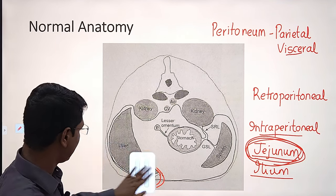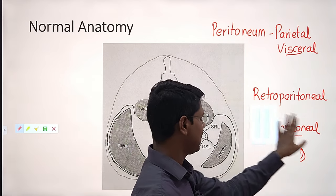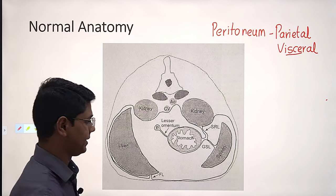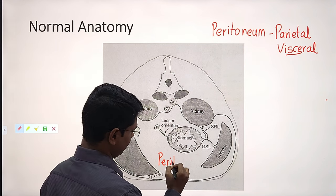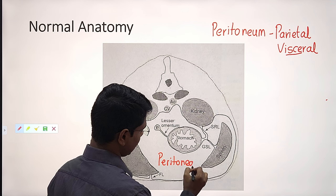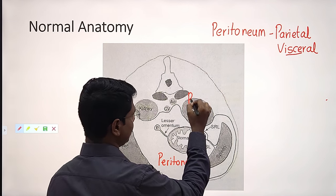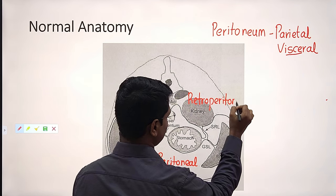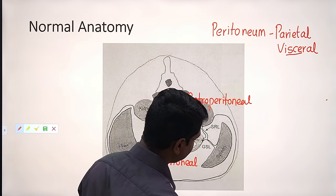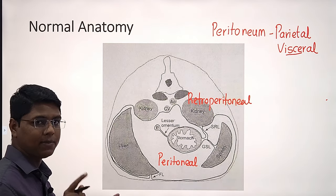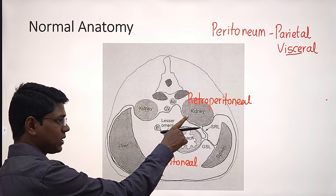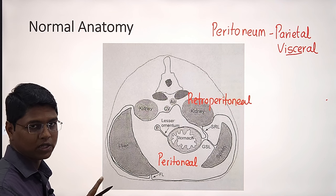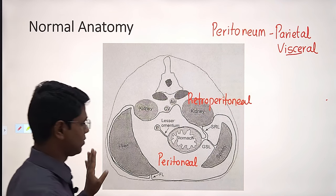Now you have understood the normal anatomy. Due to this specific arrangement, there are two cavities — the peritoneal cavity and the retroperitoneal cavity. So when you say abdominal cavity, it includes both retroperitoneal and peritoneal cavities. Abdominal cavity is not equal to peritoneal cavity. Remember this.